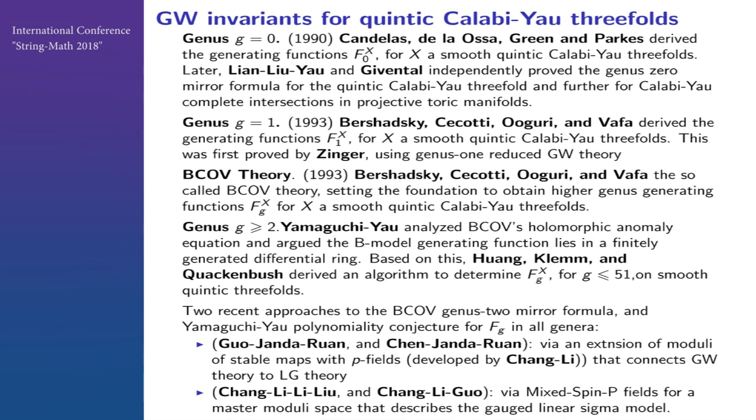Some of this is exciting because the formula that Candelas et al. proposed was actually proved independently by two groups of people. This really justifies the physical intuition behind string theory, which I think is very important psychologically. Then it came to my surprise that BCOV, who are all here, proposed the formula for genus one and also higher genus data.